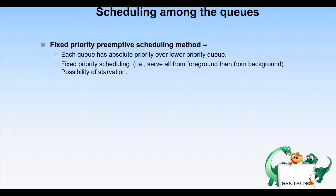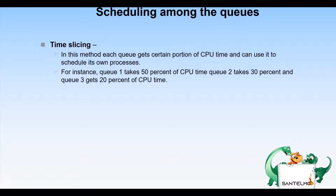There is a possibility of starvation with fixed priority preemptive scheduling. For example, with Q1, Q2, and Q3, no process in the batch queue (Q3) can run unless Q1 and Q2 are empty. If a batch process is running and a system (Q1) or interactive (Q2) process enters the ready queue, the batch process is preempted.